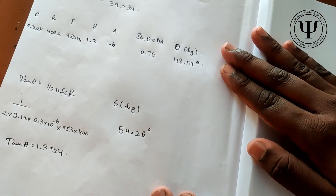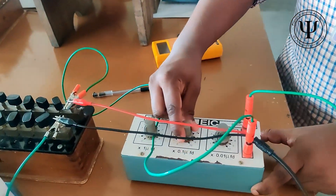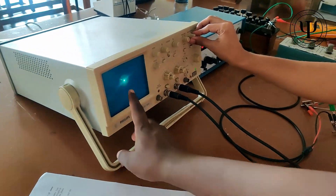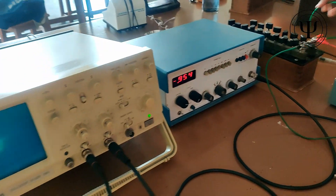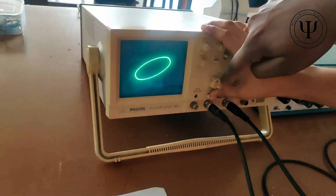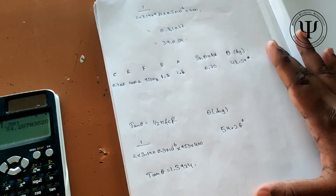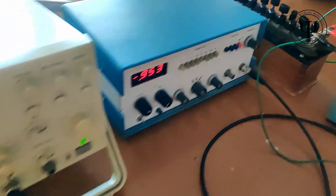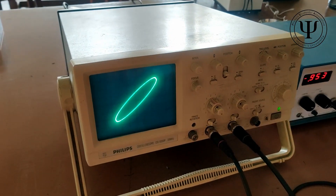For the second trial, ground both inputs by pressing the button, then set the desired capacitance, frequency, and resistance — usually one of these is changed per trial. Bring the dot that appears on the oscilloscope screen back to the center, then unground the inputs to get a new ellipse — that's your Lissajous figure. It is mainly suggested to change the C value and R value; for example, instead of 400 ohms you can use 500 ohms. You will get different theta values which should be similar in nature. As we can see, the Lissajous figure changes accordingly.